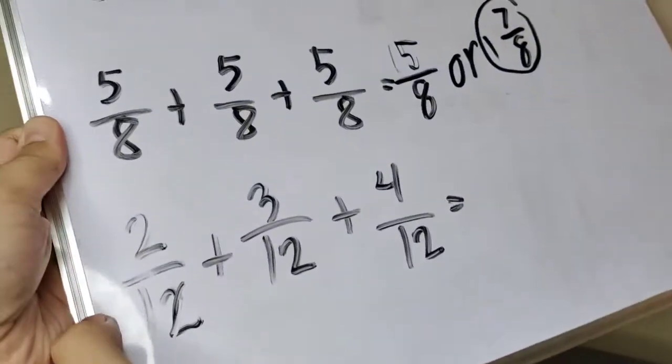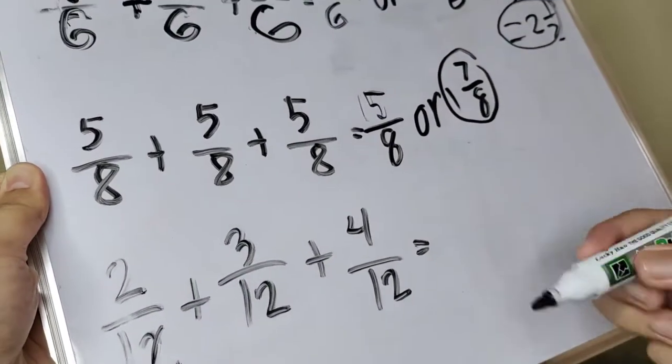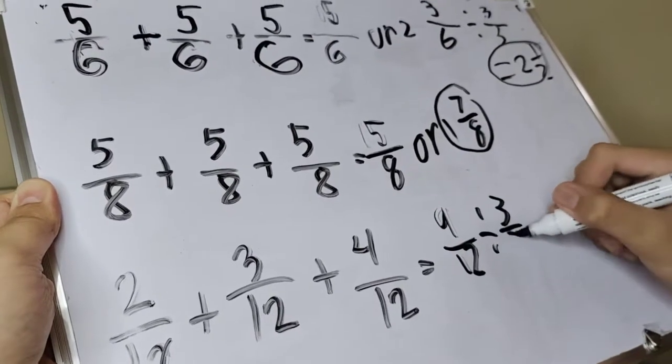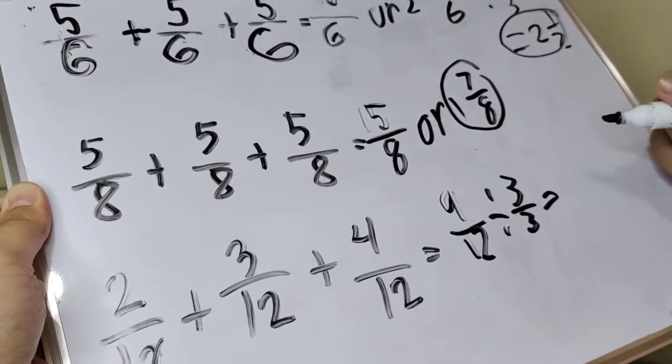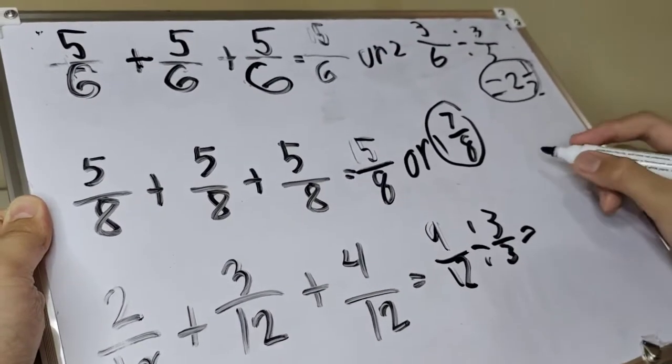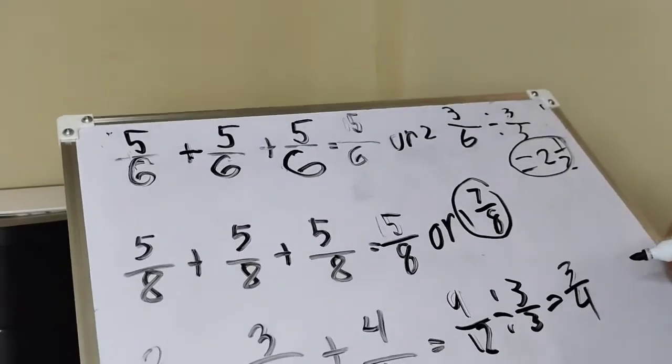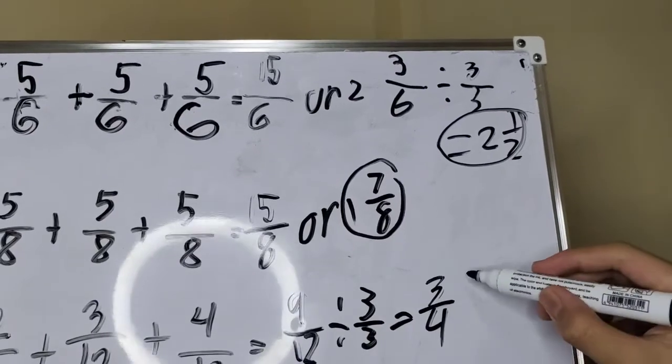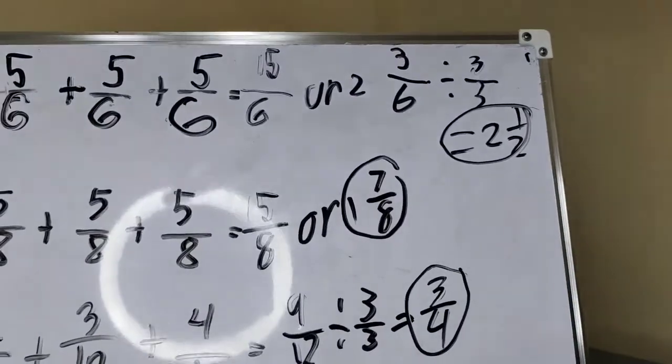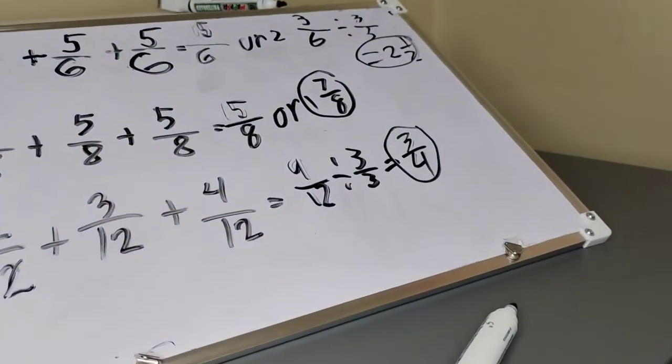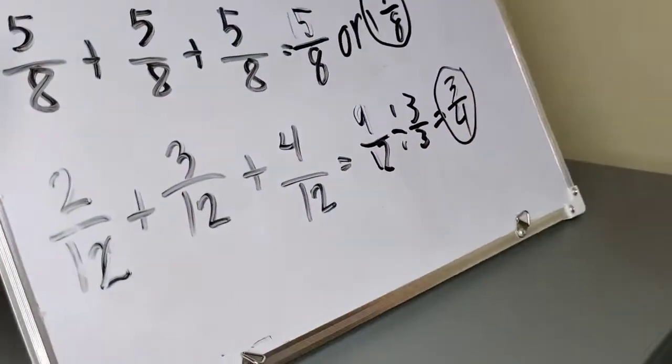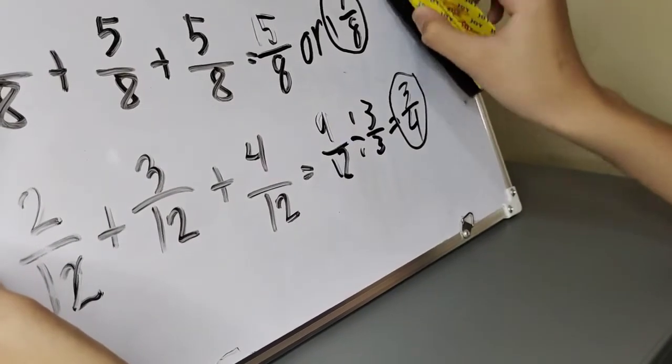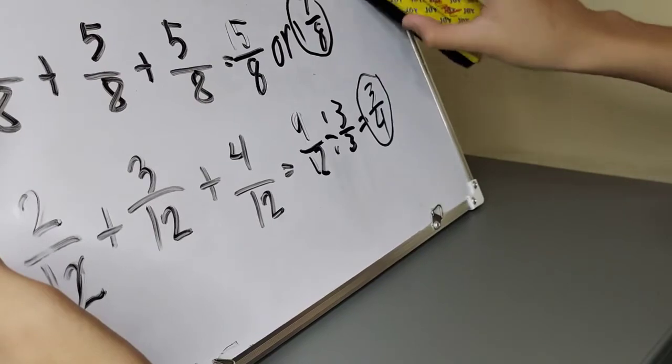Next number. 2 plus 3. 5 plus 4. 9 of 12. Pwede pa tayo divide sa 3. 3, 4. Sagot. 2/12 plus 3/12 plus 4/12 is equal to 9/12 or 3/4.